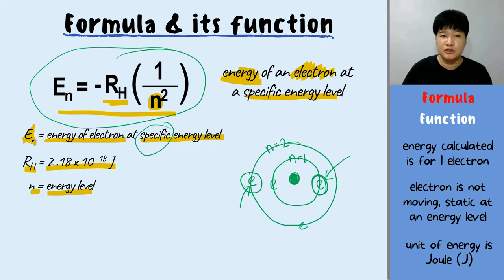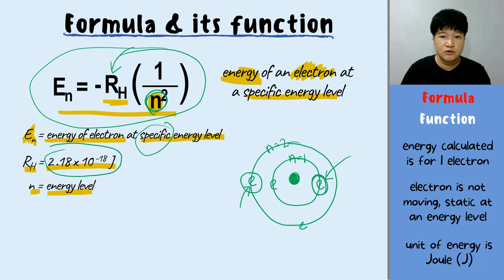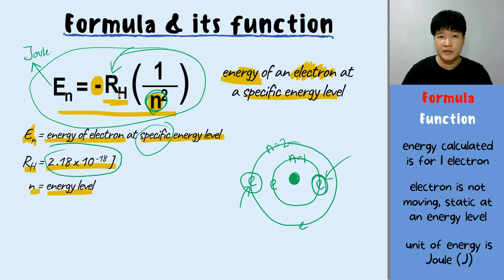Simply substitute in the Rydberg constant 2.18 times 10 to the power of negative 18, and the energy level of the electron. The final answer will be in joules. Make sure you don't miss the negative in this formula — the negative is a must.